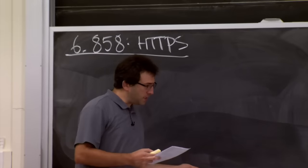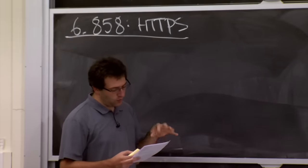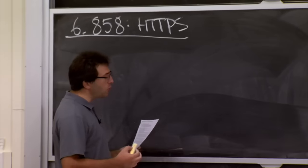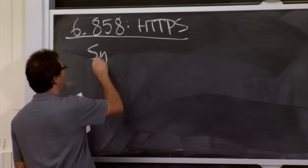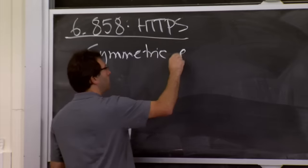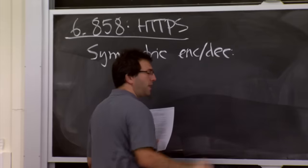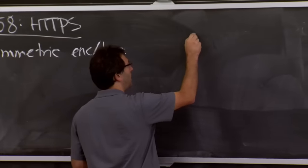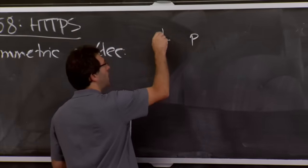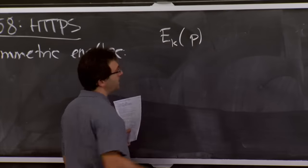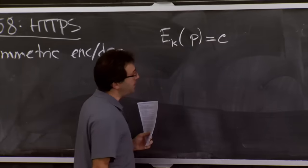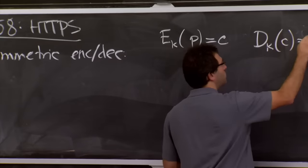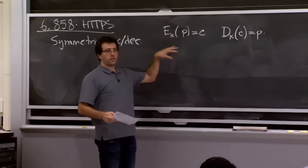Let me remind you of the cryptographic primitives we'll use. In last lecture on Kerberos, we used symmetric crypto — encryption and decryption. You have a secret key K, a plaintext P, and an encryption function. Encrypting the plaintext with key K gives ciphertext C. There's also a decryption function D that, given the same key K and the ciphertext, gives back the plaintext. This primitive is what Kerberos was built around.